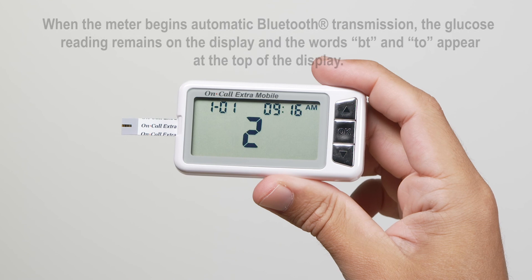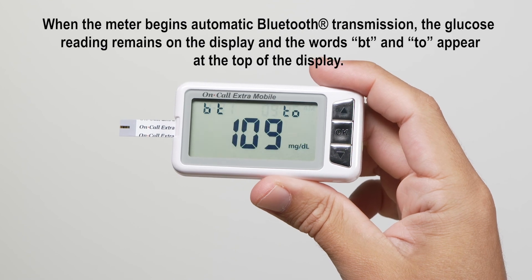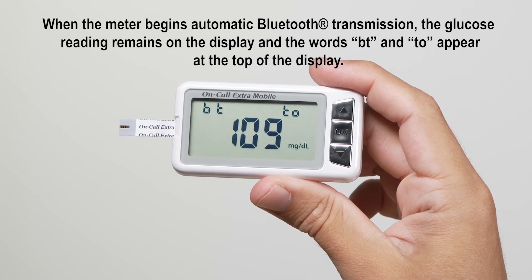If the Bluetooth auto send feature is turned on, but the meal marker feature is not, the meter will instantly go into automatic transfer of the glucose reading to your smart device.